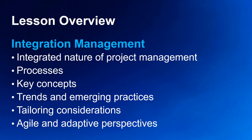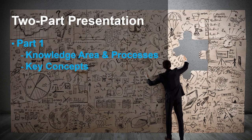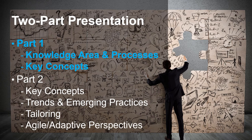We cover tailoring considerations for integration management that a project manager should think about when adapting the project to fulfill the particular needs of project stakeholders, organizations, and the environment. And lastly, we have agile and adaptive perspectives to reflect upon and apply to agile and adaptive project environments and development life cycles, where change is prevalent and where teams handle work incrementally. These life cycles, especially agile, have many of the aspects of integration built in. Project integration management is the first knowledge area in the PMBOK guide. Most lessons are divided into the same two parts: part one provides an overview and key concepts, and part two continues with trends, tailoring considerations, and agile perspectives.